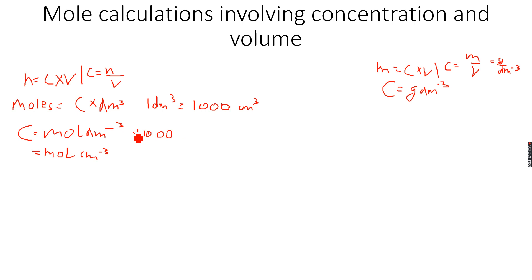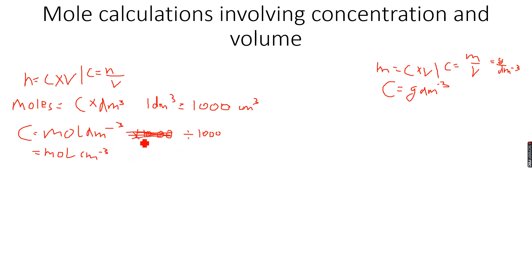I just realized I made a slight mistake — over here this will not be multiplied by 1000, it will be divided by 1000. Please correct whatever you have written, because when we convert mole per dm³ to mole per cm³, we divide by 1000, since 1 dm³ equals 1000 cm³. Please correct this and let's move forward.